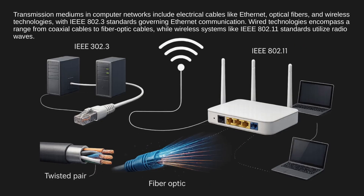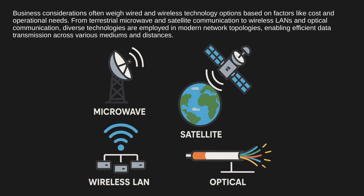Transmission mediums in computer networks include electrical cables like Ethernet, optical fibers, and wireless technologies, with IEEE 802.3 standards governing Ethernet communication. Wired technologies encompass a range from coaxial cables to fiber-optic cables, while wireless systems like IEEE 802.11 standards utilize radio waves. Business considerations often weigh wired and wireless technology options based on factors like cost and operational needs, with diverse technologies such as terrestrial microwave, satellite communication, wireless LANs, and optical communication enabling efficient data transmission across various mediums and distances.